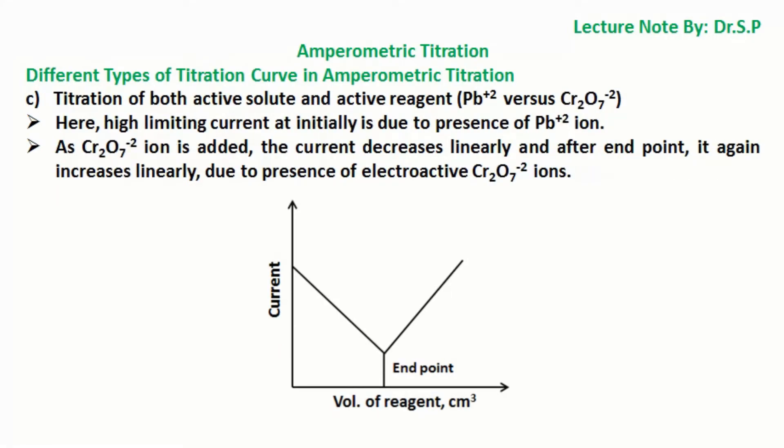Titration of both active solute and active reagent, that is lead ion Pb²⁺ versus dichromate ion Cr₂O₇²⁻. Here, high limiting current at initially is due to presence of lead Pb²⁺ ion. As dichromate Cr₂O₇²⁻ ion is added, the current decreases linearly and after end point, it again increases linearly, due to presence of electroactive dichromate Cr₂O₇²⁻ ions.